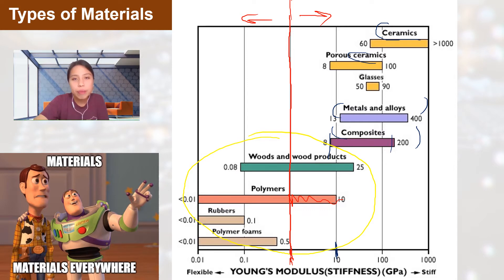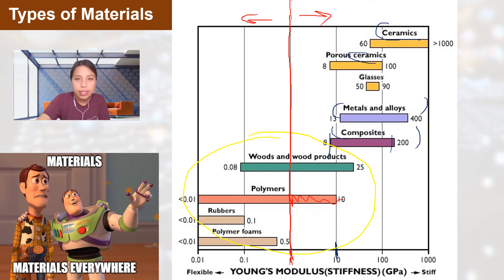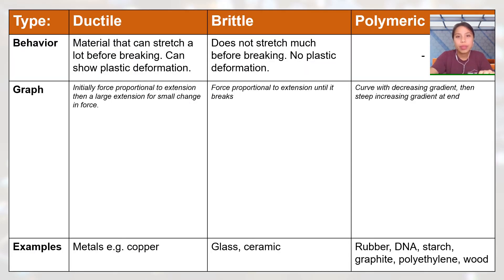Now the extra syllabus part — it will help you with some of the older past-year questions in the handout. Let's look at the types of materials. All those materials can be categorized into roughly three types: ductile, brittle, and polymeric. Here's a nice table of all of them.